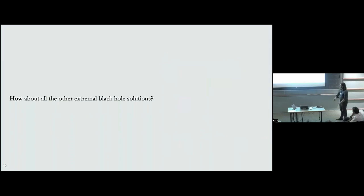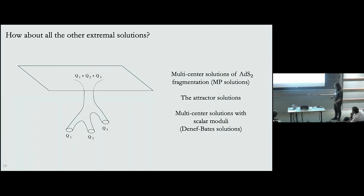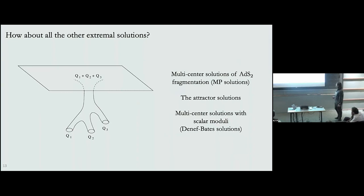Here I've only discussed single-center black holes in Einstein-Maxwell theory and supergravity. The results were quite general, but there is a whole zoo of extremal solutions found throughout the years. For instance, one can consider multi-center solutions discussed in the context of AdS2 fragmentation — the so-called Majumdar-Papapetrou solutions. There are also more complicated solutions in supergravity that include scalar moduli, called attractor solutions, and generalizations that are multi-center with scalar moduli — called Denef solutions.